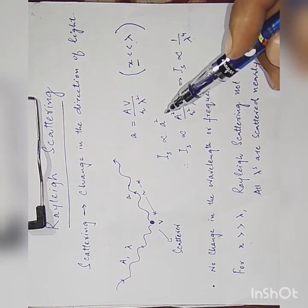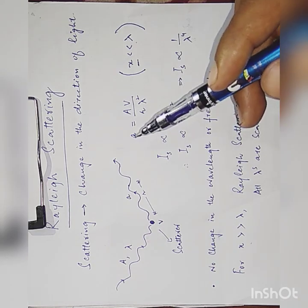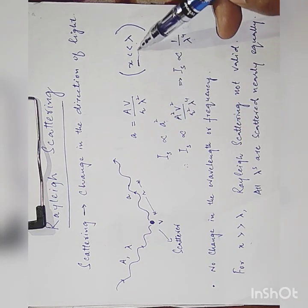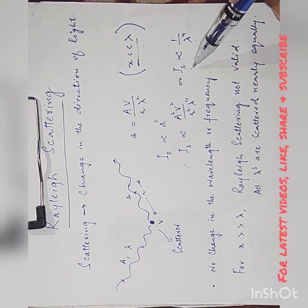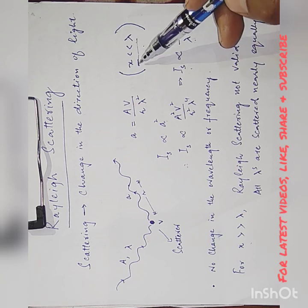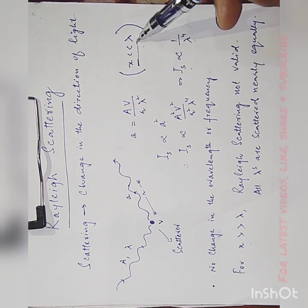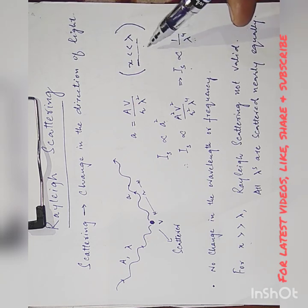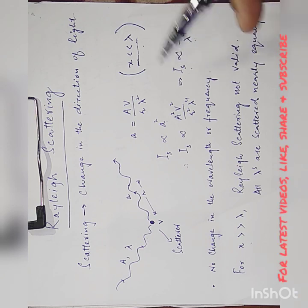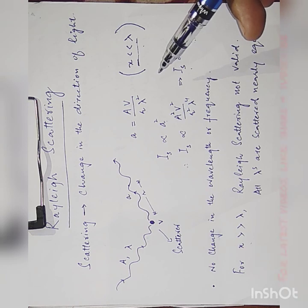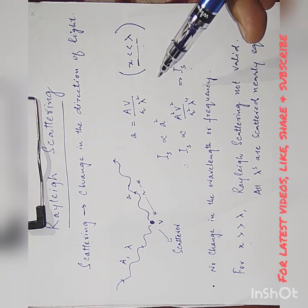The main point you need to remember is that in Rayleigh scattering, the condition that particle size must be much less than the wavelength must be satisfied. Only then we accept the inverse relation between intensity and lambda raised to power 4. I hope you have understood this topic well. If you like this video, please subscribe, like and share. Thank you.